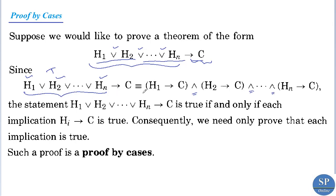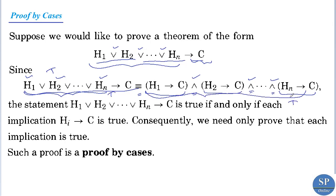This theorem or implication is logically equivalent to H1 implies C, and H2 implies C, and etc. — that is, this is a conjunction. This implication is true if and only if each of these implications is true. Consequently, we need to prove that each implication is true: prove H1 implies C is true, and H2 implies C is true, and so on.